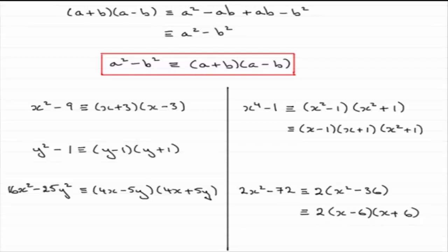Well, I hope you've been able to follow this particular idea. And if you spot this pattern now — a squared minus b squared, called the difference of two squares — you can start to factorize expressions like this into this format.